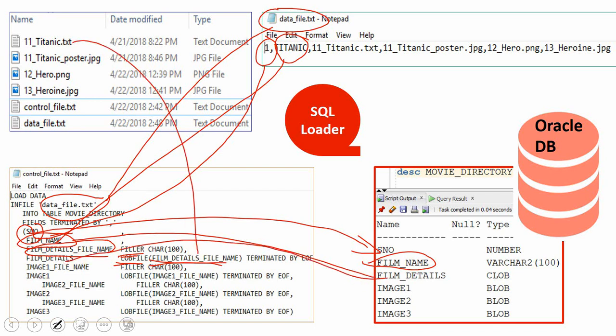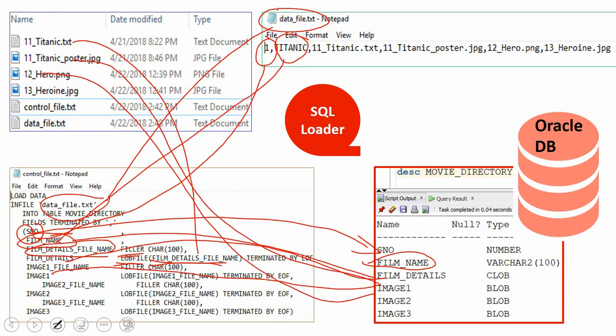Similarly, image1 content will be loaded into the image1 BLOB column. The first image is loaded into image1 column, the second image into image2 column, and the third image into image3 column.